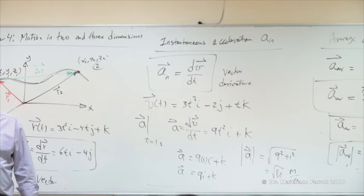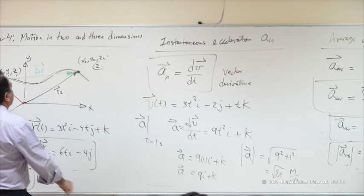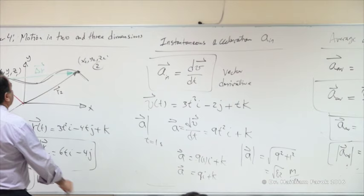This way we finish all of the kinematic quantities. What we did so far: we just repeated everything and thought of it as a vector. Instead of positive and negative, we use I, J, K. Same definitions. Now what was the special case we had in Chapter 2? Motion with constant acceleration.